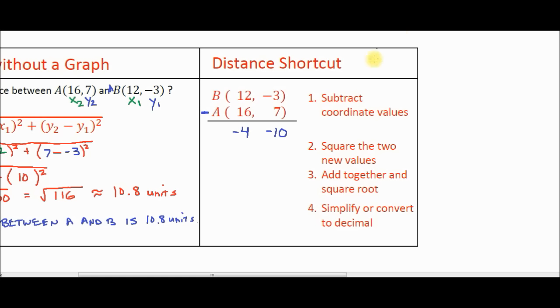Step number two says square the two new values. So let's square them. So I can go ahead and put parentheses around here and put a square, parentheses around here and put a square. I don't need to do that though. In your calculator, you could just put in there parentheses negative 4 squared. And negative 4 squared is negative 4 times negative 4, which is positive 16. Negative 10 squared or negative 10 times negative 10 is positive 100.